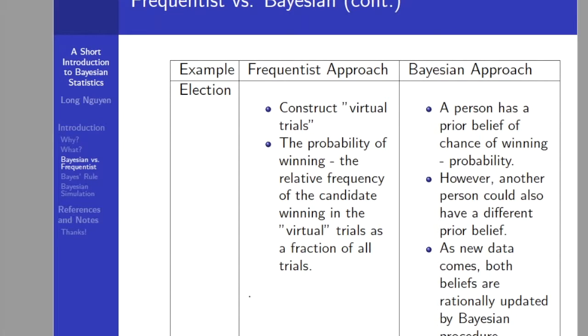On the other hand, on the Bayesian approach side, a person has a prior belief of a candidate's chance of winning an election, and that person's confidence can be quantified as a probability. However, another person could also have a different prior belief about the same candidate's chances. As new data comes, both beliefs are rationally updated by the Bayesian procedure.